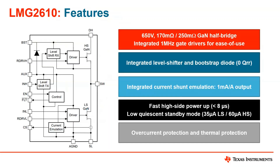Some other features: we have fast high-side power up during system power on that's less than 8 microseconds. We have a low quiescent standby mode — 35 microamps consumed by the low side gate driver and GAN FET when in standby mode, and only 60 microamps by the high side. This is one of the industry-leading features of this device, outperforming most contemporaries, whether other integrated GAN devices or a discrete solution. And built-in overcurrent protection and thermal protection come standard across all TI GAN products.